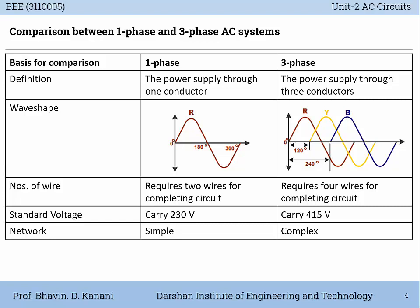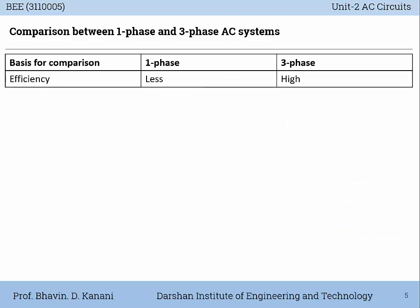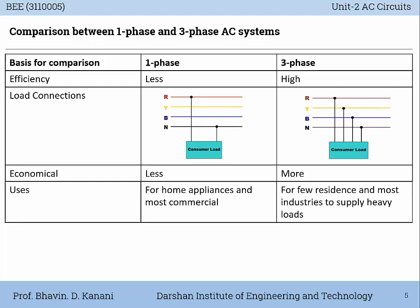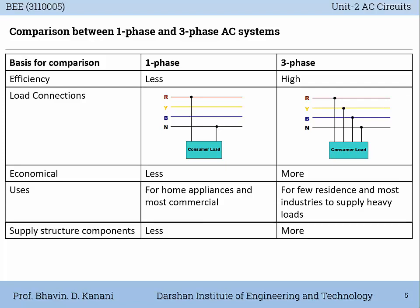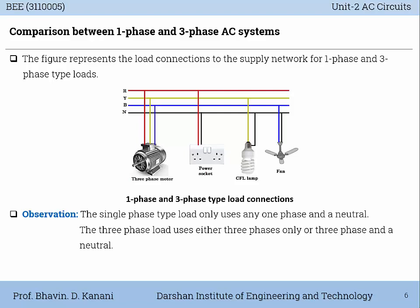Single-phase supply carries 230 volts as a standard in India, and for three-phase system it is 415 volts. Single-phase network is simple but three-phase network is comparatively complex. The overall losses in a single-phase system are considerable, whereas in three-phase it is less. Efficiency of single-phase is less compared to three-phase. Single-phase is less economical. Single-phase is mostly used in home appliances and commercial purposes, while three-phase is mostly used in industries for heavy loads. The three-phase type load is comparatively higher consumption.